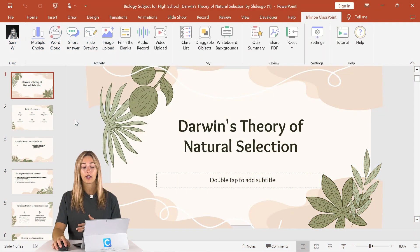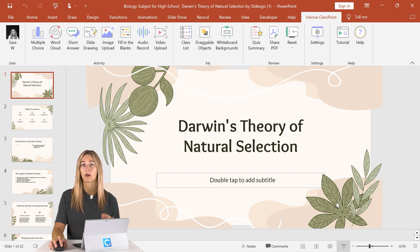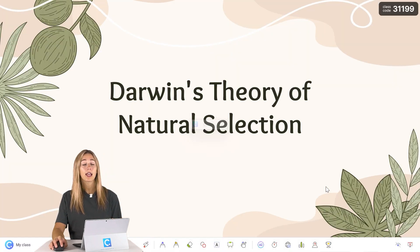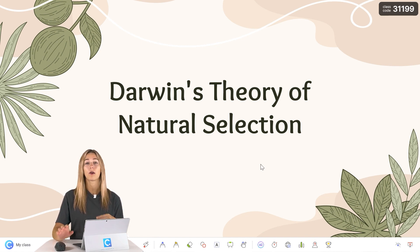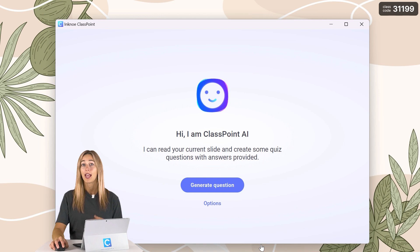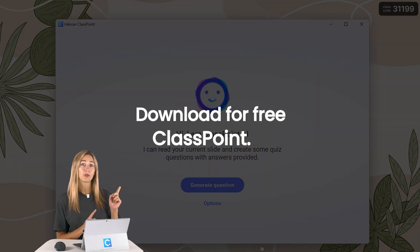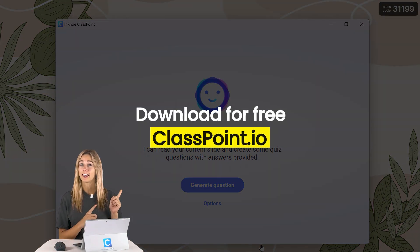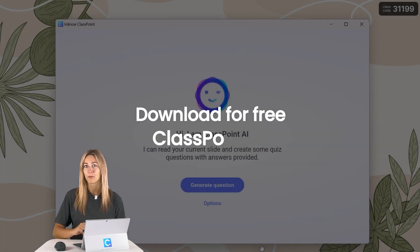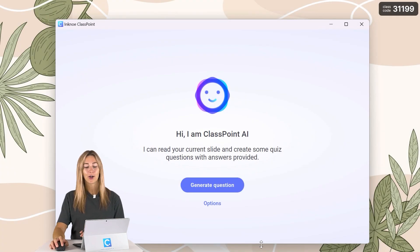I have a slide deck already opened up here, and to get AI generated questions based on the information on my slides, I'm going to go straight into our presentation mode. Now the AI can generate questions based on any one of your slides in your presentation, but we're just going to start with this intro slide. That way we start our quiz nice and general. So we're going to click on the AI button on the ClassPoint toolbar. If you don't have ClassPoint yet, make sure you download and install for free at classpoint.io.